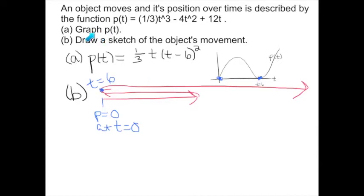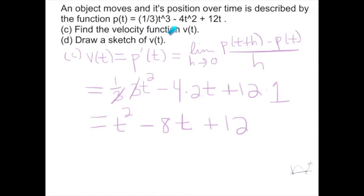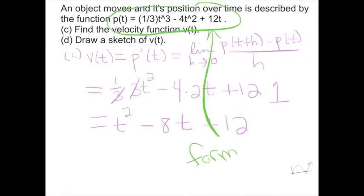In part a, I factored the position function in order to graph it. Notice that in part c I did not use the factored form to take the derivative — because the power rule requires a sum or difference of power terms; I cannot apply the power rule to a product. The main point: the expanded form is derivative-friendly, while the factored form is graphically friendly. Factor it if you need to graph it; leave it in expanded form if you need to take the derivative.